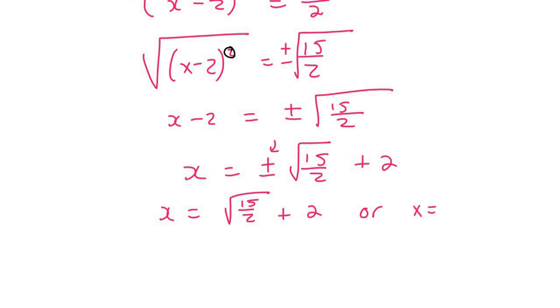Or x will be, now I'm going to use the negative, so it's negative like that. And then I'm going to say plus 2. So now it's a matter of just typing this on your calculator. And that's going to give you 4.74 or negative 0.74. And there's our two answers.